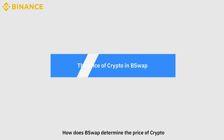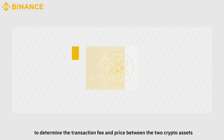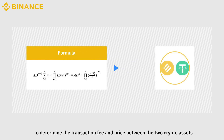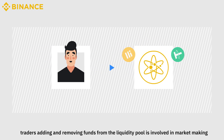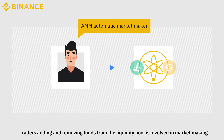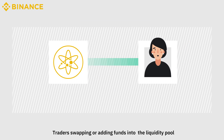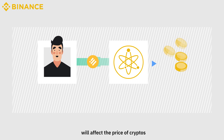How does Beatswap determine the price of crypto? Beatswap uses the following formula to determine the transaction fee and price between the two crypto assets. Traders adding and removing funds from the liquidity pool is involved in market making. In the same way, traders swapping or adding funds into the liquidity pool will affect the price of cryptos.